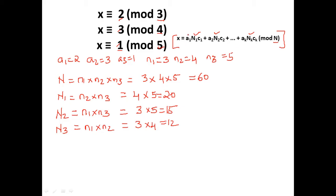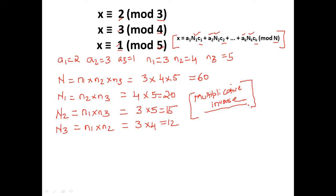We know a1, N1, a2, N2, a3, N3. The next thing we have to compute is c1, c2, and c3 — the modular multiplicative inverses. In our last session we saw how to compute modular multiplicative inverses, and c1, c2, c3 are exactly those inverses.